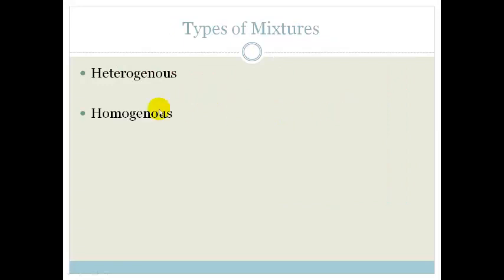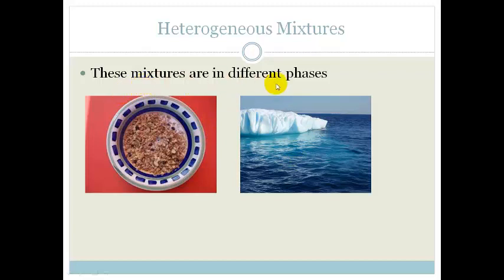There are also two types of mixtures. There's heterogeneous and homogeneous. Heterogeneous means that they are in different phases. In other words, solid and liquid. Or in this case again, solid and liquid.